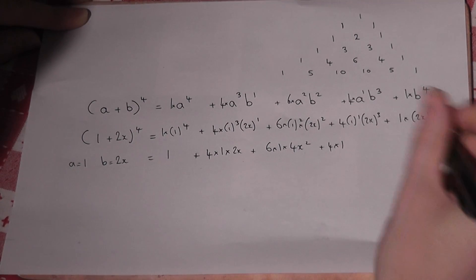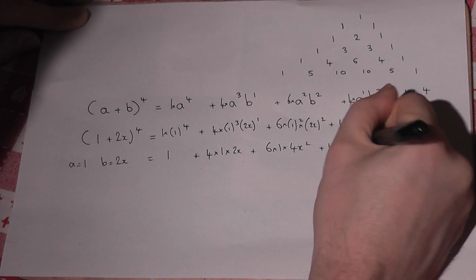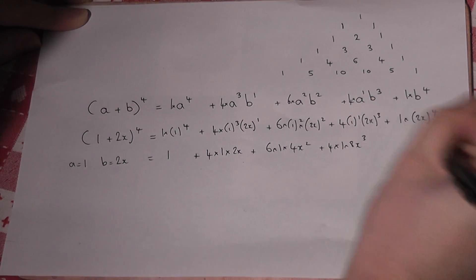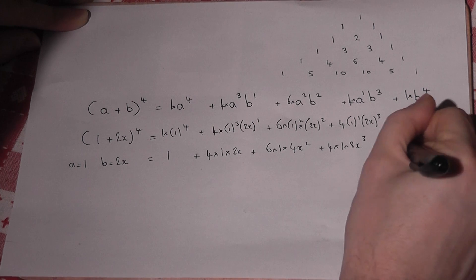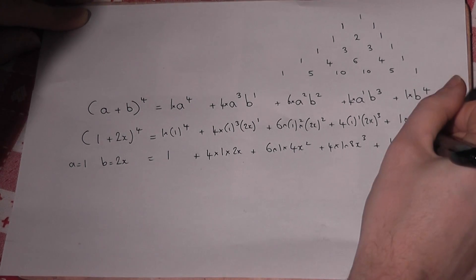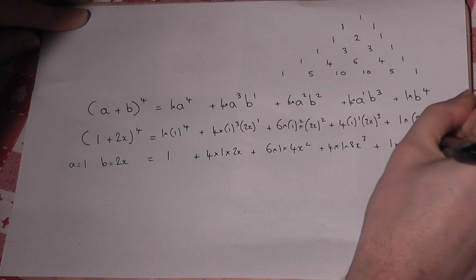And it's 4 lots of 1 lots of 2^3 is 8, 8x^3. And finally it's 1 lot of 2 to the 4 is 16x to the power of 4.